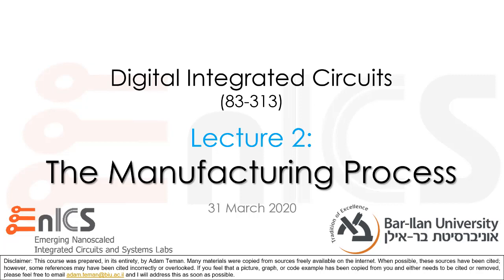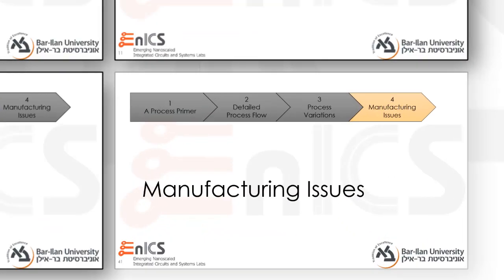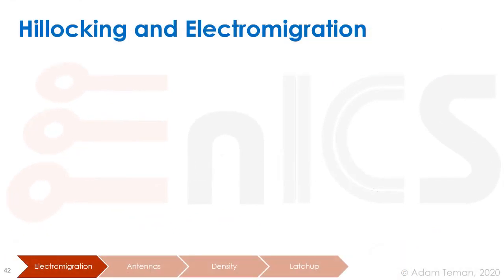Hi everybody and welcome back to lecture on the manufacturing process. We'll now go to our fourth and last section, in which I will discuss several manufacturing issues. The first issues we're going to discuss are hillocking and electromigration.